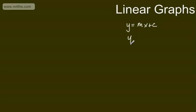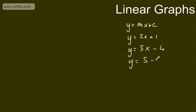Let's start with linear graphs. At GCSE, these are in the form y is equal to mx plus c, where m is the gradient and c is the y-intercept. An example might be y is equal to 2x plus 1, so this has a gradient of 2 and a y-intercept of 1. We might have y is equal to 3x minus 4, so we've got a gradient of 3 and a y-intercept of minus 4. It might be written in the form y is equal to 5 minus x, so this time we've got a gradient of minus 1 and a y-intercept of 5.